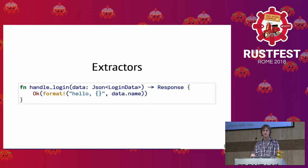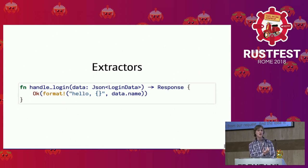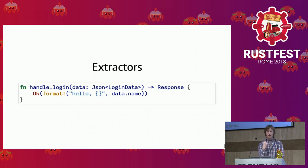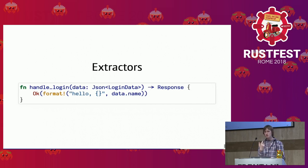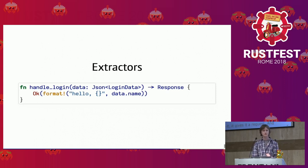This allows you to express what data you want extracted from the request without having to do it yourself. It also composes nicely — you can have a type that is JSON or form data, or a tuple of a query string, a JSON part, and the path of the URL.